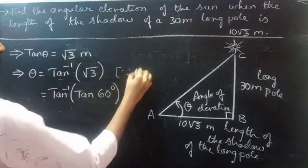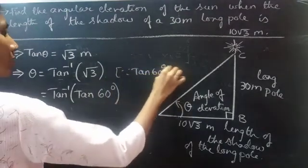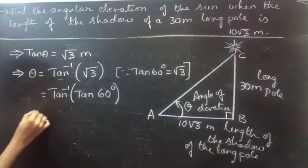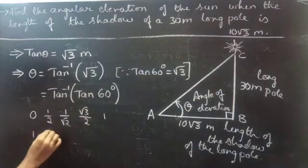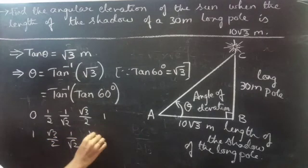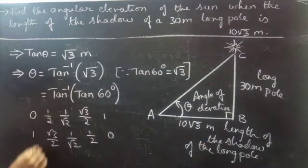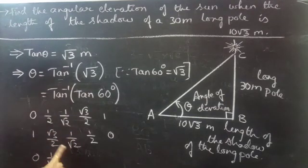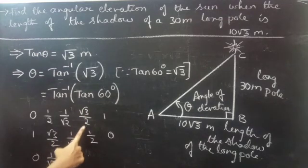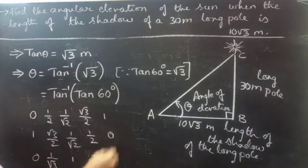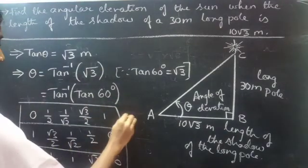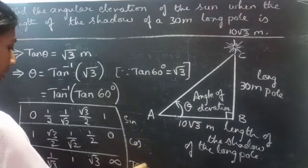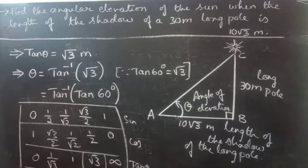Since tan 60 degrees equals to root 3. If you want, you can check: the sin values are 0, 1/2, 1/root 2, root 3 by 2, and 1. The cos values are 1, root 3 by 2, 1/root 2, 1/2, and 0. Computing tan: 0 by 1 is 0, then 1 by root 3, then 1, then root 3, then undefined. So tan 60 degrees equals to root 3.